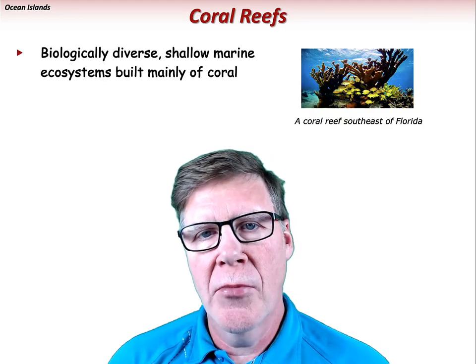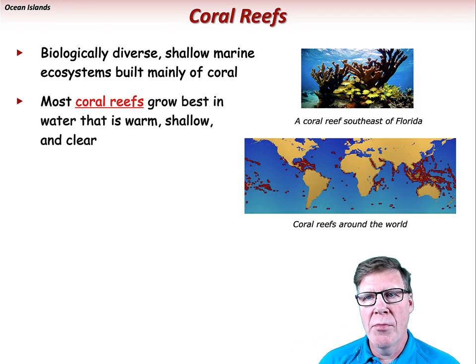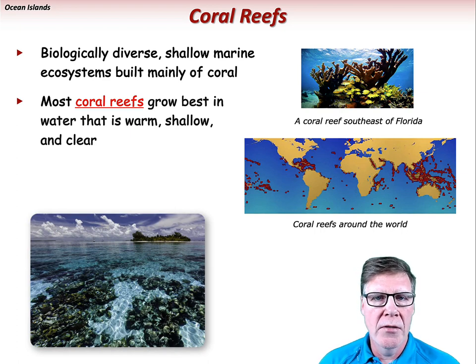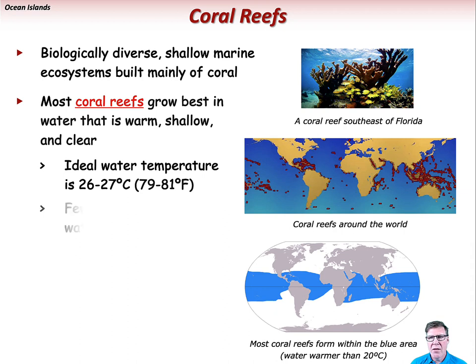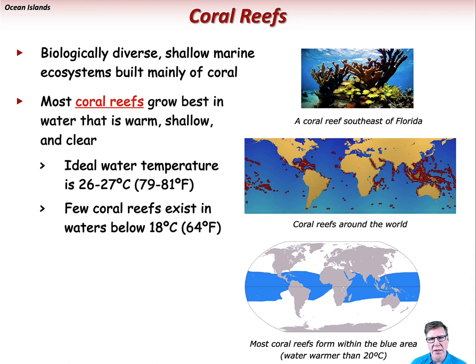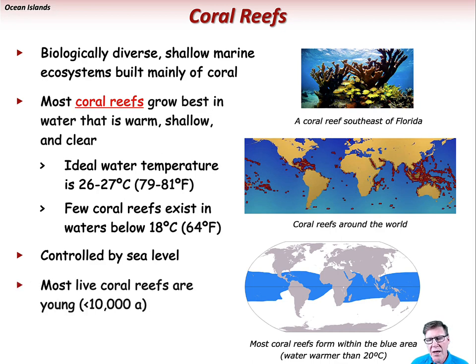Coral reefs are biologically diverse shallow marine ecosystems built largely of coral, a marine animal. Most coral reefs grow best in water that is warm, shallow, and clear. Ideal water temperature is 26 to 27 degrees C, roughly 79 to 81 degrees Fahrenheit. Few coral reefs exist in colder waters below 18 degrees C, roughly 64 degrees Fahrenheit. Coral reef development is largely controlled by sea level, with most coral reef growth occurring within 60 to 90 feet from sea level. Most live coral reefs are relatively young, less than 10,000 years or so.